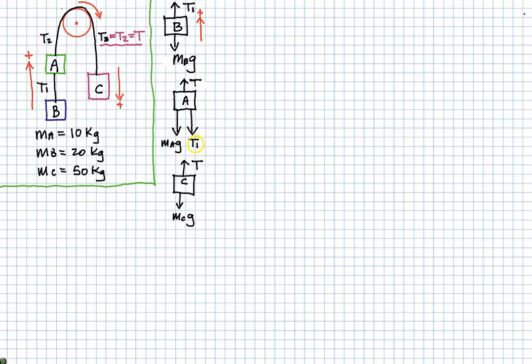So again, it's T1 pulling down on A. Now the upward force is T2. We can say T2 or we can just call this T because T2 is equal to T3 as depicted in the original diagram.